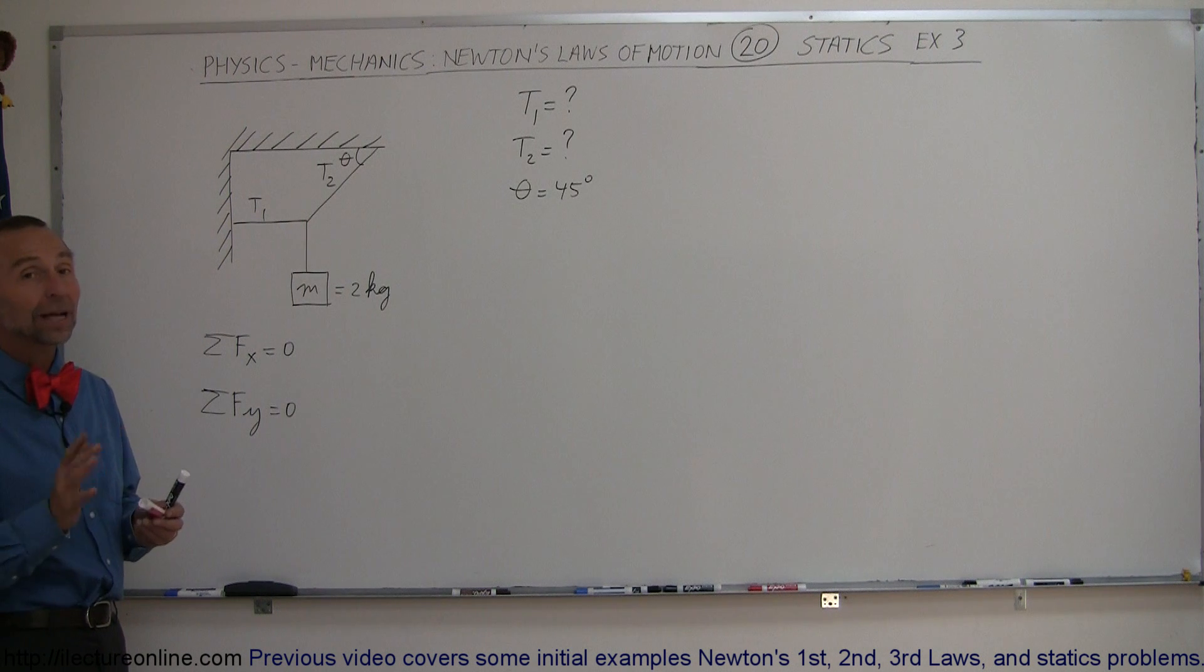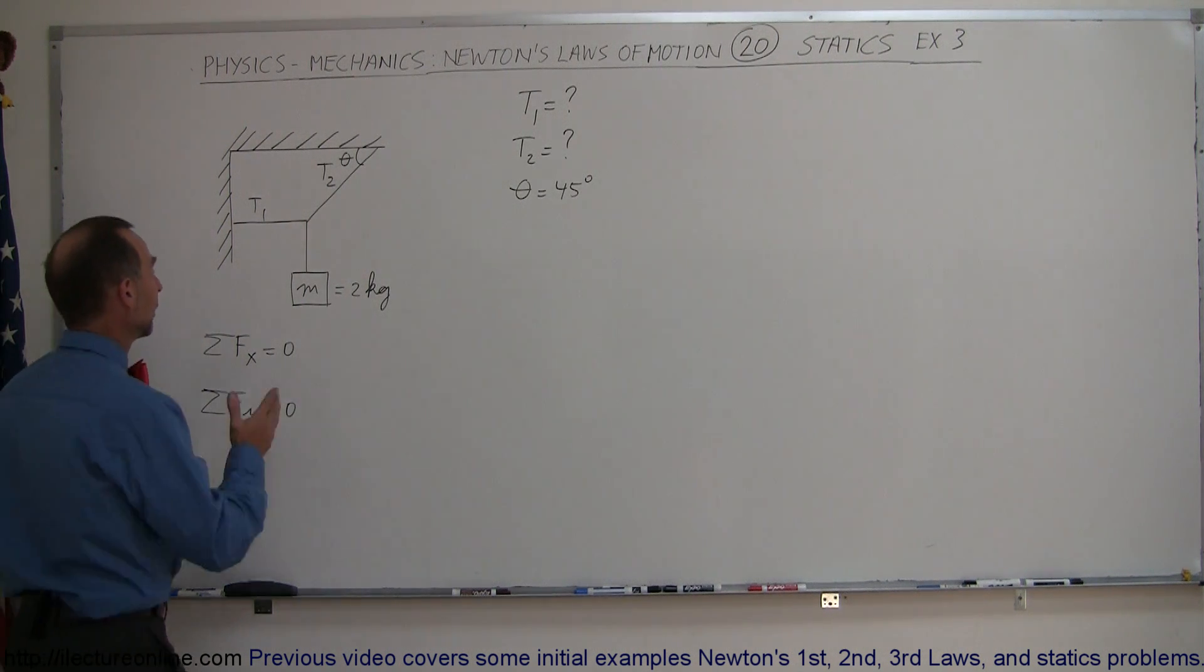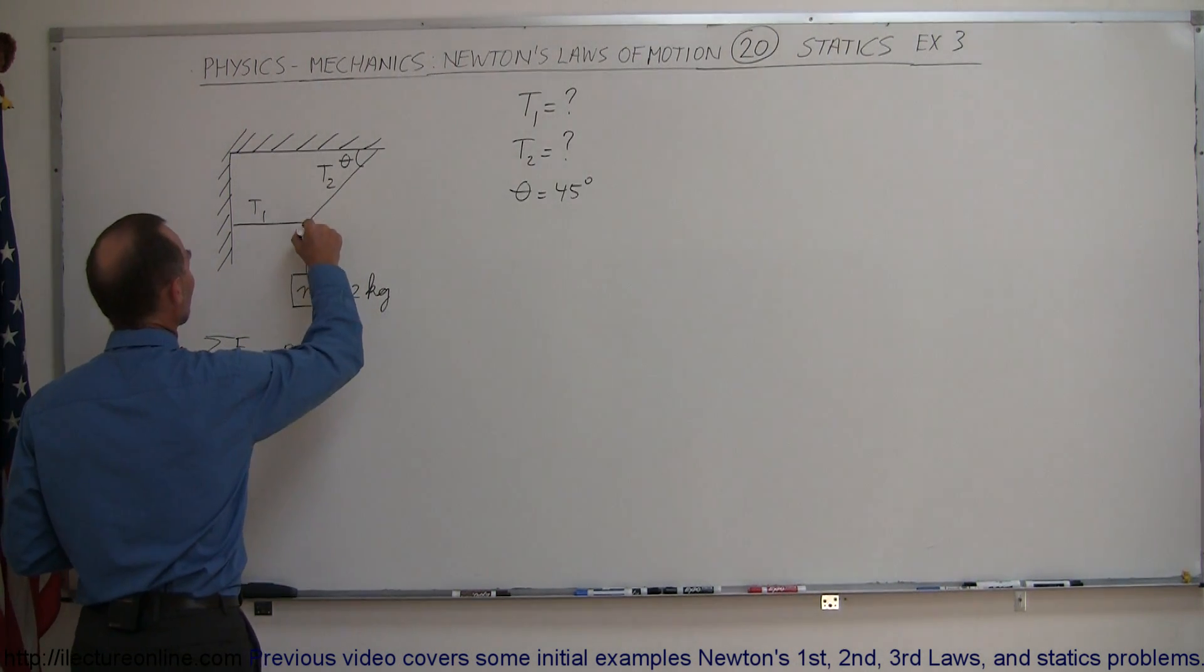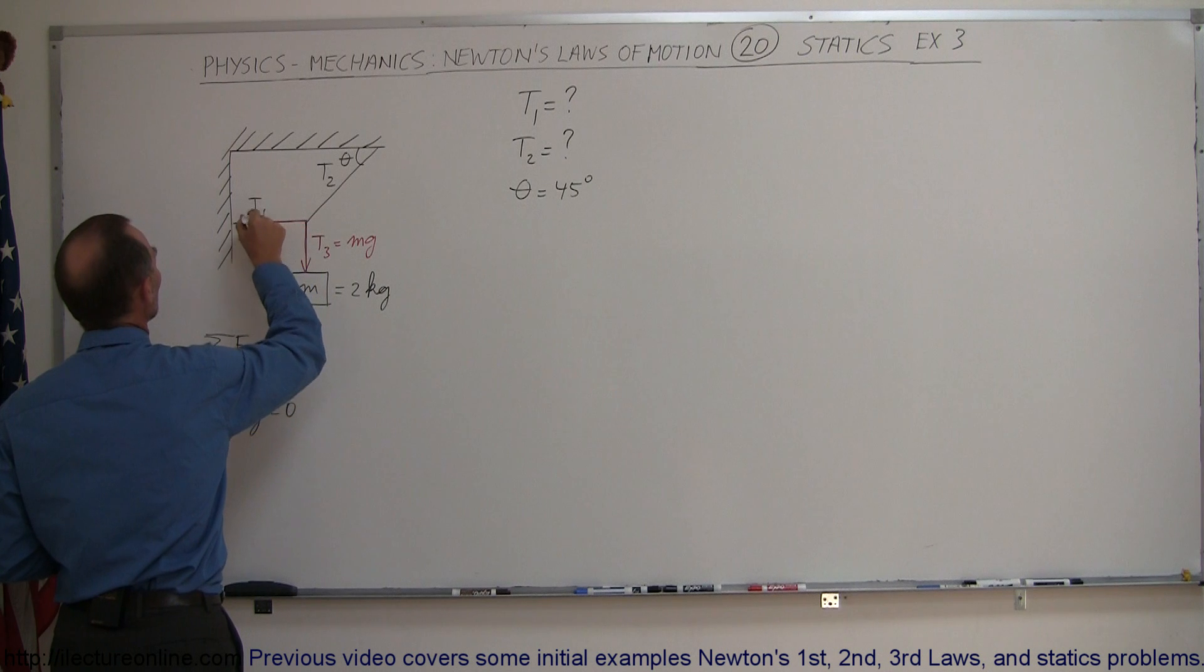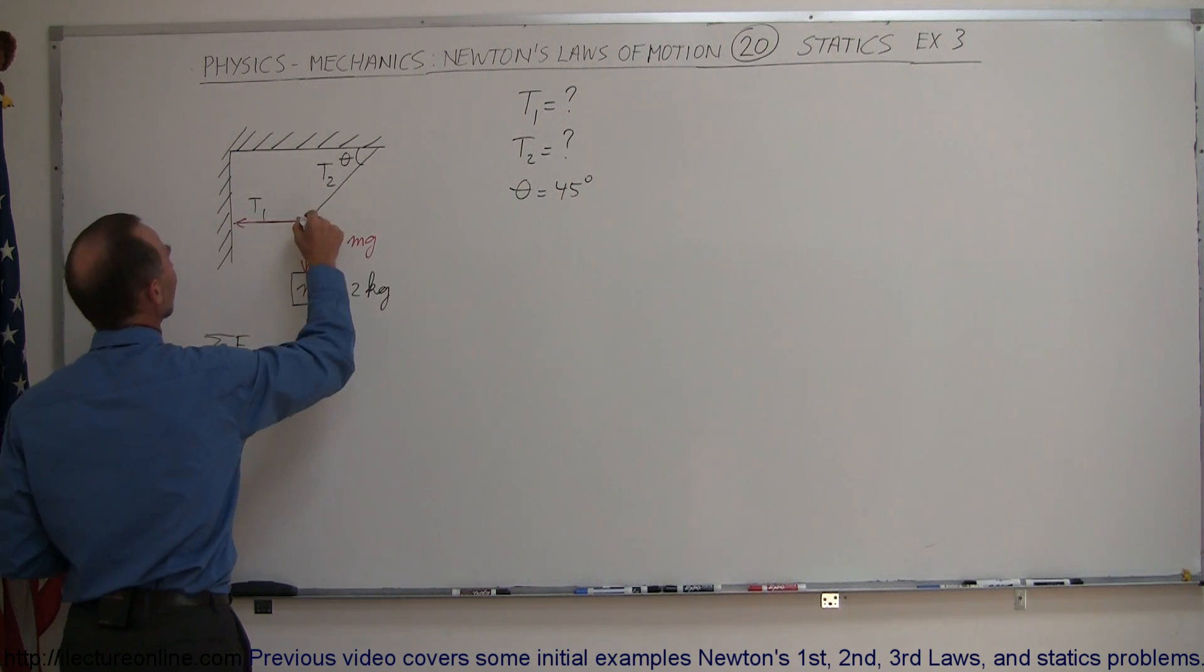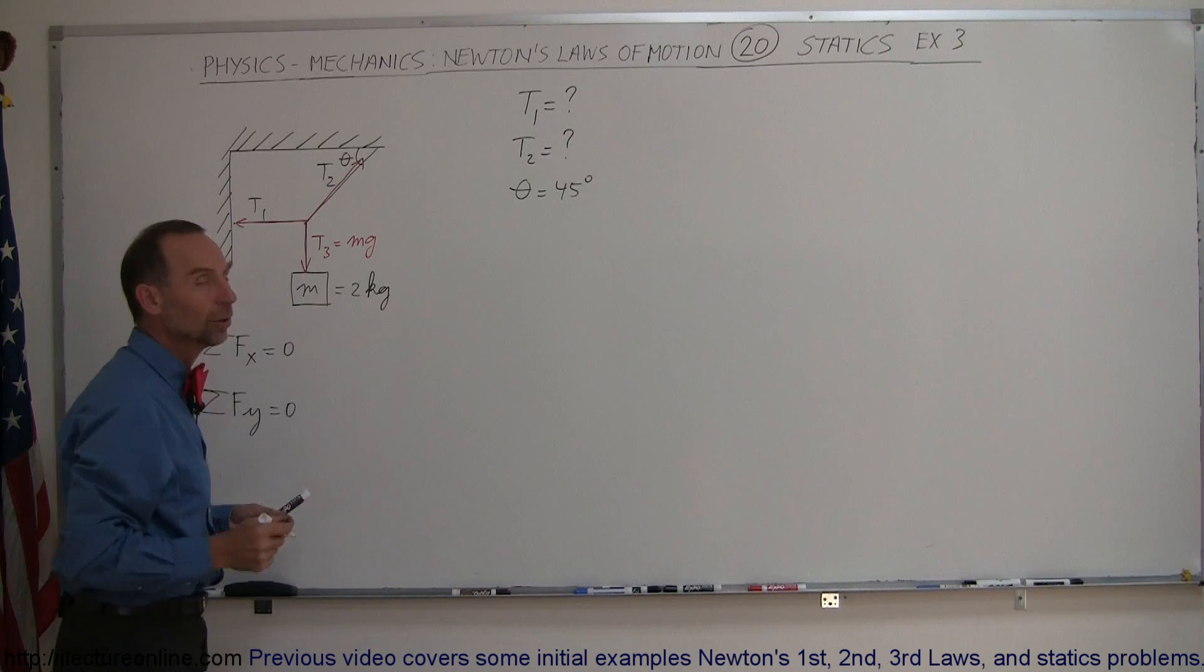We need to find all the x and y components of all the forces. We can see that here we have a force acting downward. Let's call that T3, which is equal to mg, the weight of this object. Here we have tension 1, which is pulling to the left, and we have tension 2, which is pulling up at an angle.